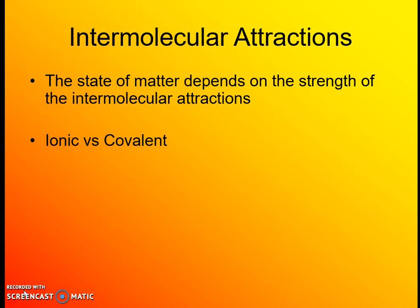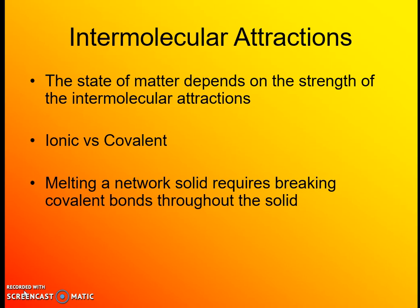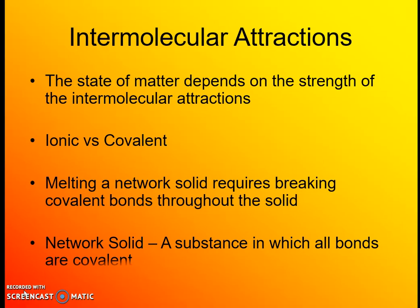Covalent molecules are their own separate entities; they don't have full positives and negatives like ionic compounds, just partial charges attracting them together. However, one special type of covalent compound is a network solid — like diamond — where you have carbons bonded to carbons bonded to carbons in a large crystalline structure. To melt a network solid, you have to break apart every single covalent bond, which requires considerably more energy than other covalently bonded compounds.